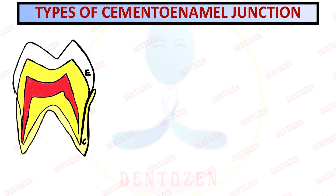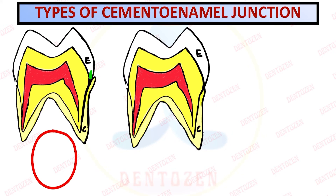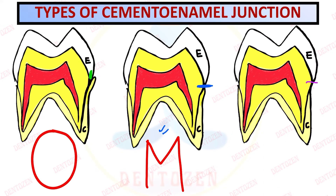Let me show you a few pictures and you can guess the type of CEJ. In the first, cementum is going above the enamel - this is called the overlap type. In the second, the two are meeting nicely edge to edge - this is called edge-to-edge junction. In the third, they are not meeting and there is a gap between the two - this is called gap junction.